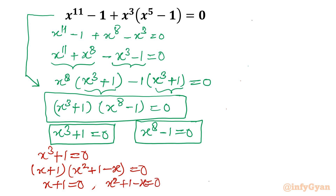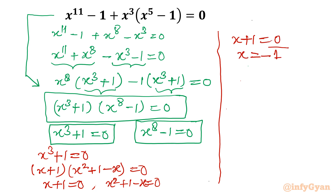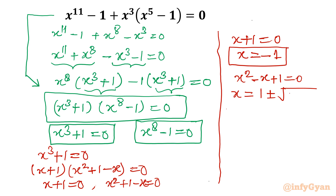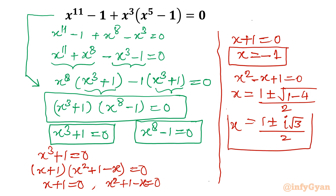So I can write either (x plus 1) equal to 0, giving x equal to minus 1, or (x^2 minus x plus 1) equal to 0. Applying the quadratic formula: x equals (1 plus or minus square root of (1 minus 4)) over 2, which gives (1 plus or minus i√3) over 2. So we have one real solution and two complex solutions from the first equation x^3 plus 1.